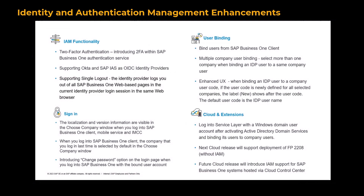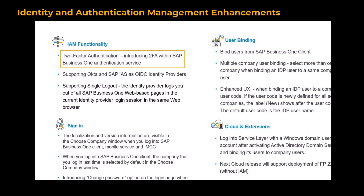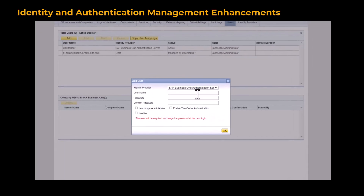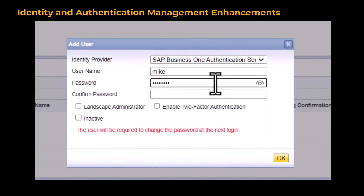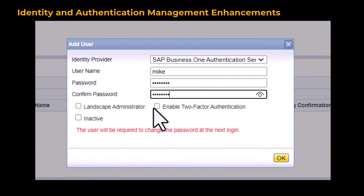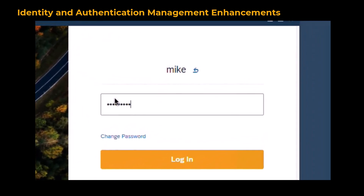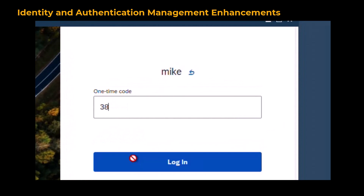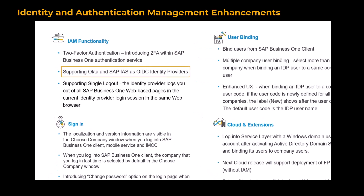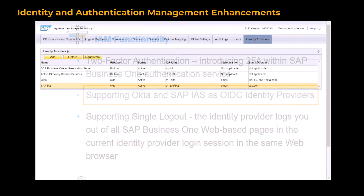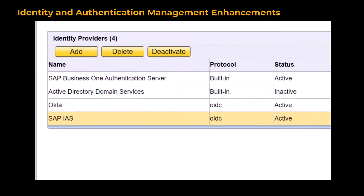In SAP Business One, there are some enhanced features for identity and authentication management. In the SLD Control Center, when you add or edit a user of the SAP Business One authentication server, you can now enable two-factor authentication. After setting up the mobile authenticator to activate your account at the first logon, from the second logon you just need to enter the one-time code upon completion of the username and password authentication. You can now register Okta and the SAP Identity Authentication Service as OIDC identity providers and bind their users to SAP Business One company users from the SLD Control Center.